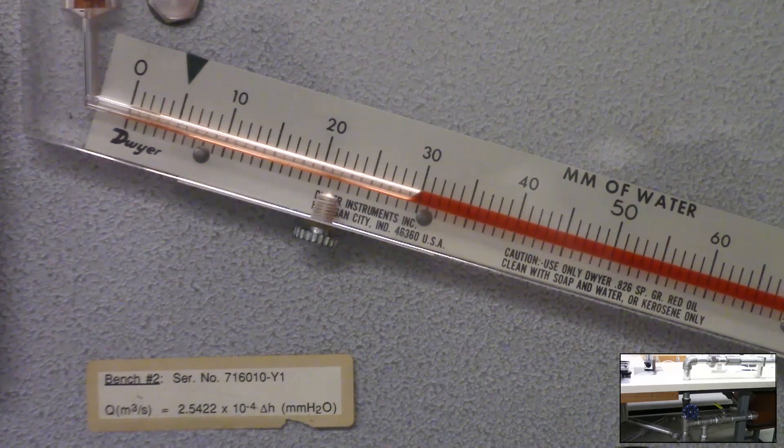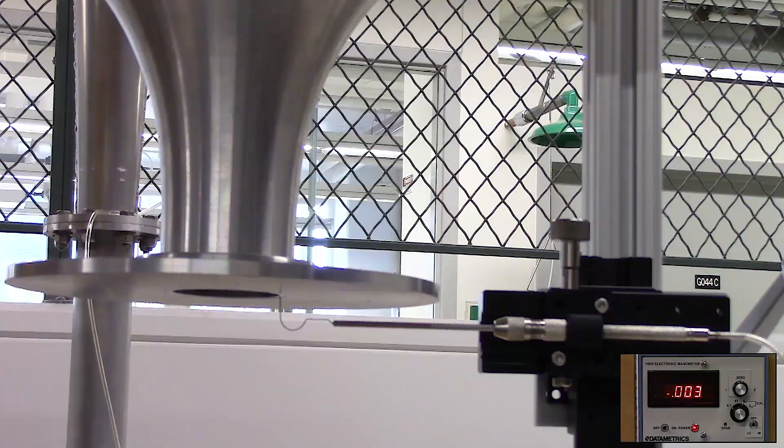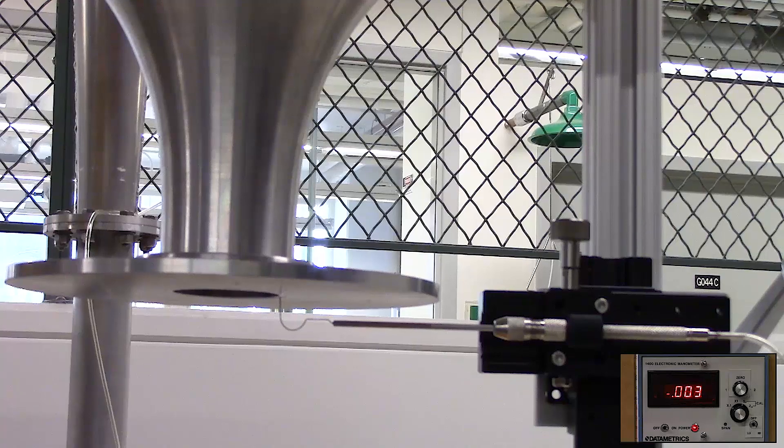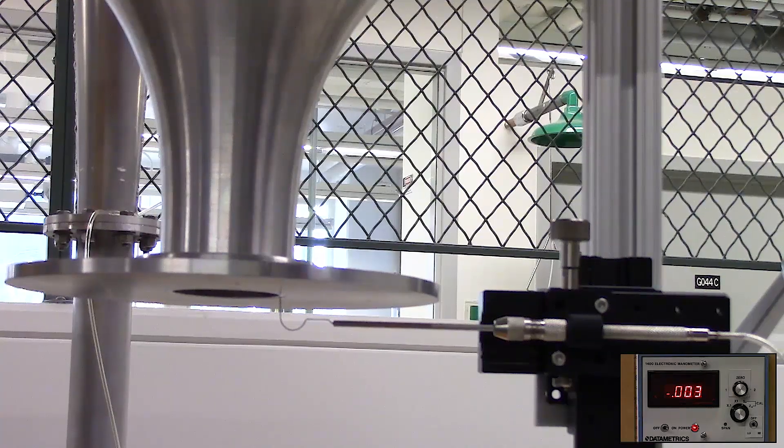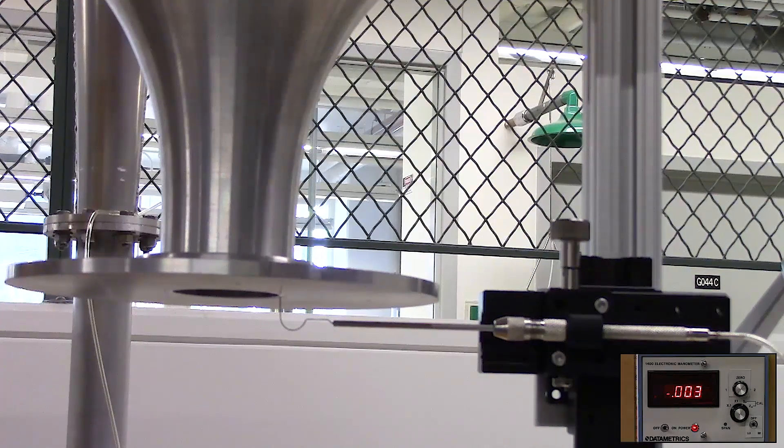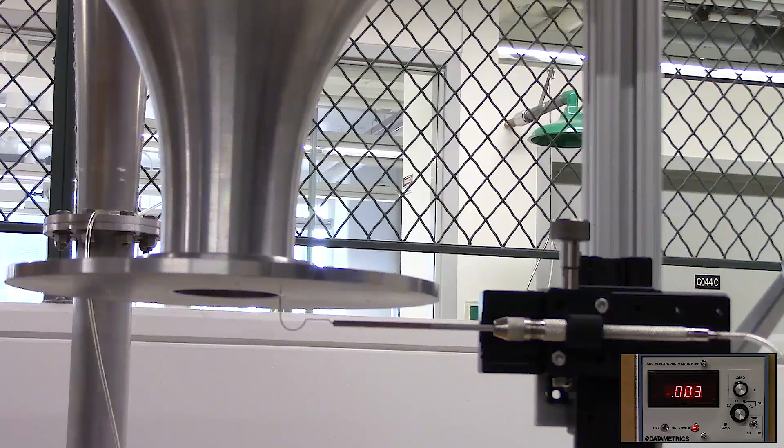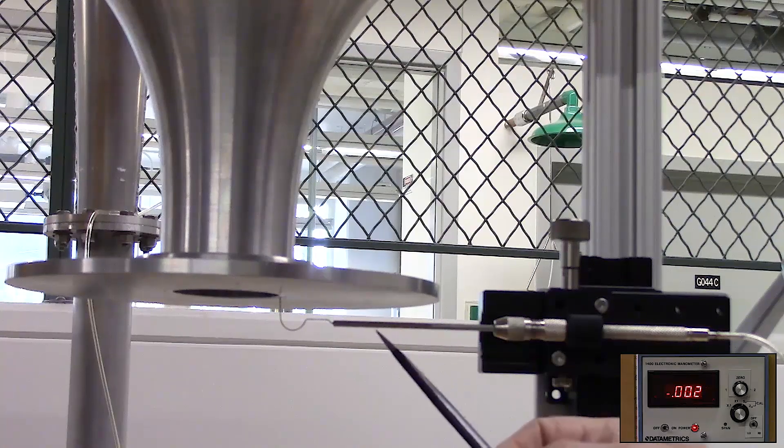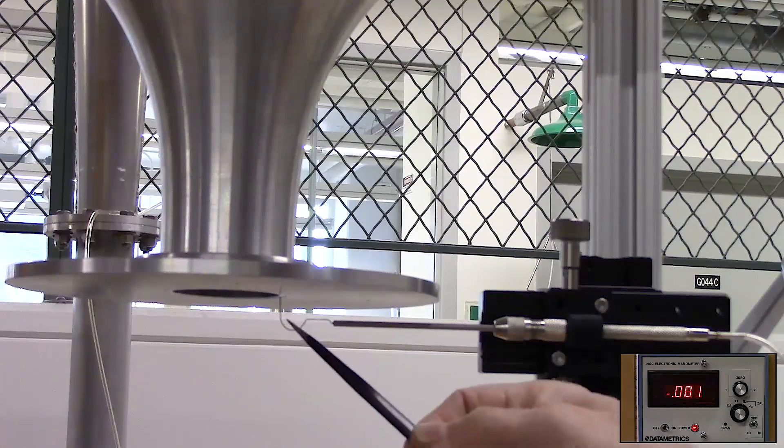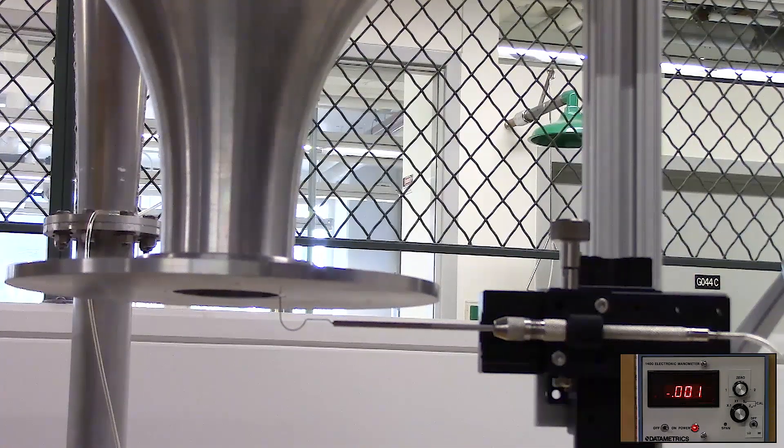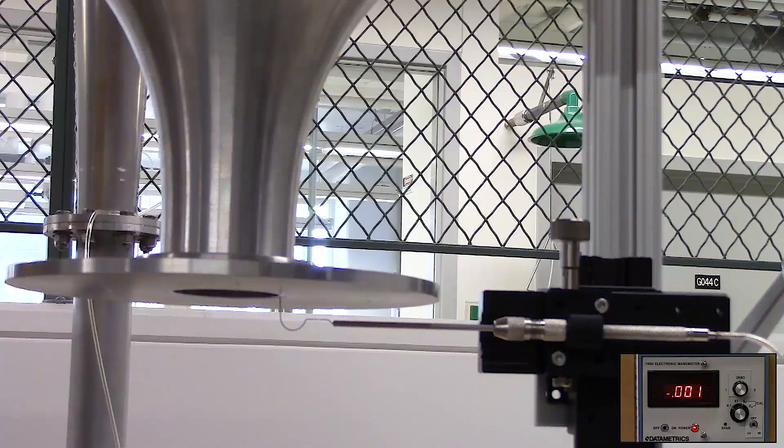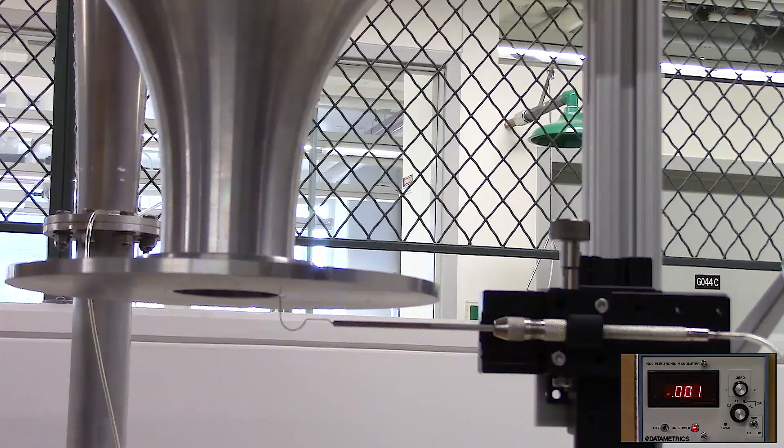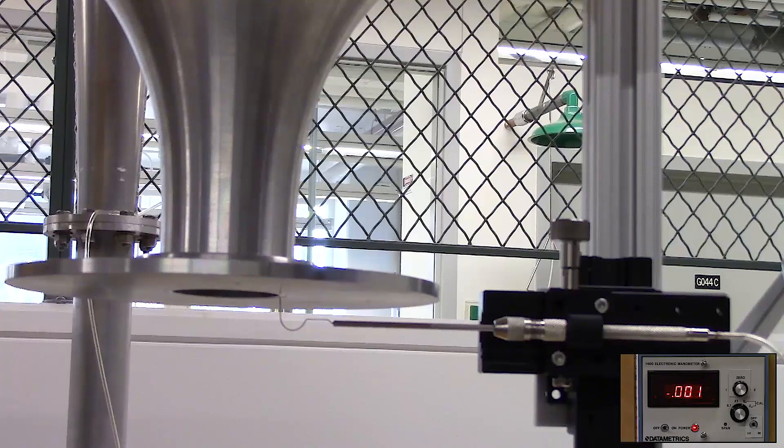Now we'll take a look at the pitot tube. Our pitot tube is set up and aligned with the center of the jet. So as I traverse it, I'm capturing the full diameter. You can see the tube itself has a larger diameter section and then a small diameter section that's inserted directly into the flow. We want that to be as small as possible so that we disrupt the flow as little as possible.